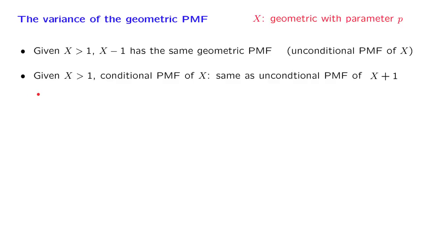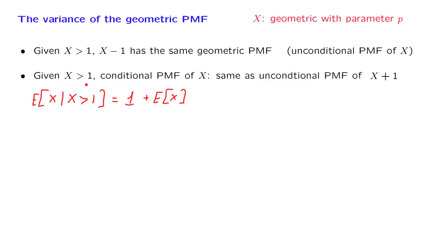One consequence of memorylessness that we have already exploited is that the expected value of x in the conditional universe where the first coin flip was wasted equals 1 — that's the wasted coin flip — plus how long you expect to flip the coin until you obtain heads, starting from the second flip. Since the conditional distribution of x equals the unconditional distribution of x plus 1, the corresponding expected value is 1 plus the expected value of x.